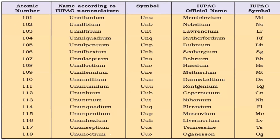Hi students, in this session I am going to teach you a super trick to remember names of the elements from 101 to 118. These names usually give students difficulty to learn — like Mendeleevium, Nobelium, Laurentium — and suddenly they ask you element 110, what is the IUPAC official name? It is Darmstadtium. Again, 115 is Moscovium. You have to remember that particular name and its atomic number.